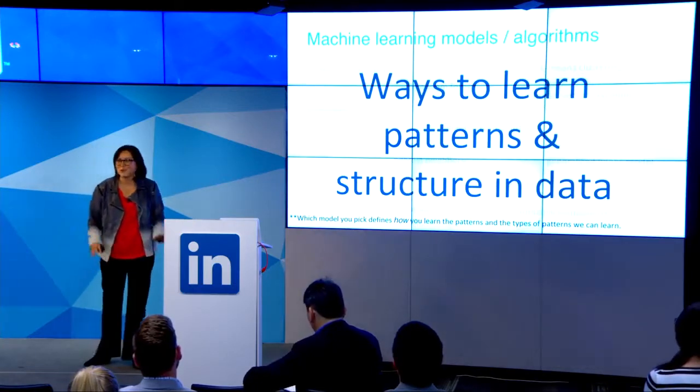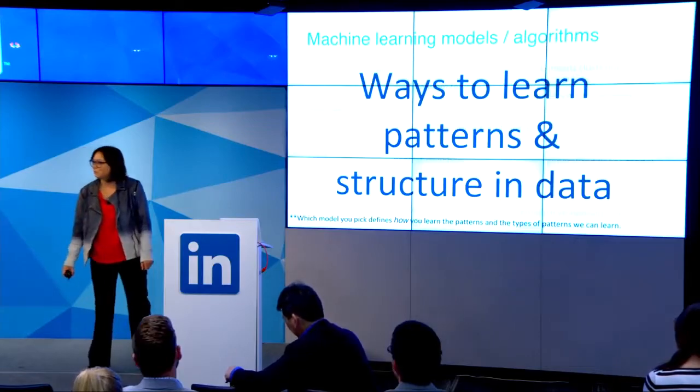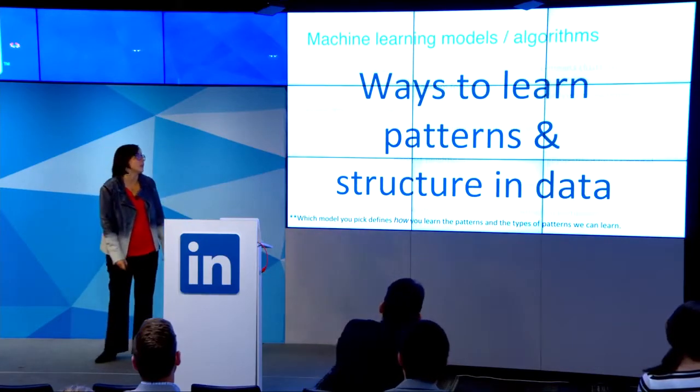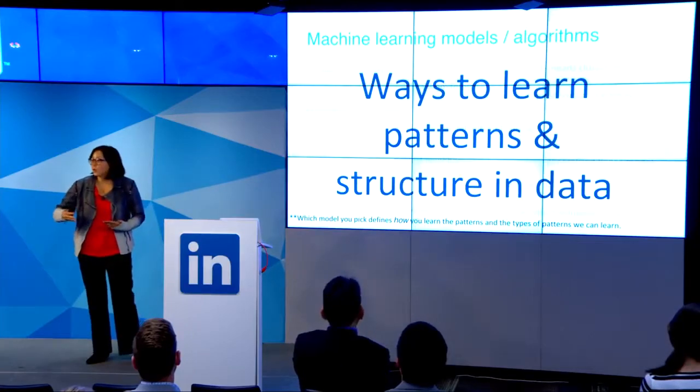The other term that sometimes makes people nervous is 'machine learning algorithms.' I just want you to think of these as ways to learn patterns and structure in data — specifically the data that's fed into them. Whichever of the many types of machine learning models you pick will determine how you learn those patterns. Maybe you can learn a straight line, a decision tree, or something far more complex. But all these models share the same goal: learning patterns in the data fed into them. If you feed in biased data, it will learn the biased patterns.